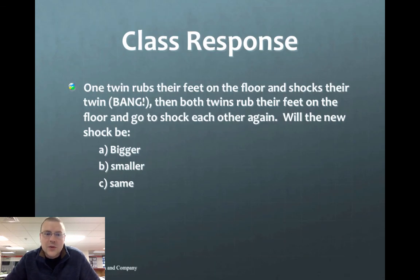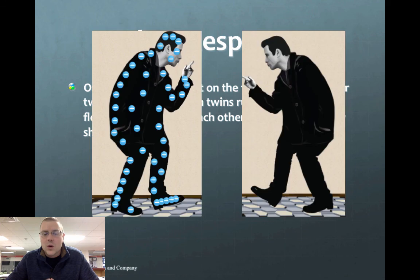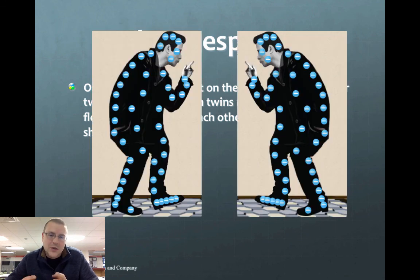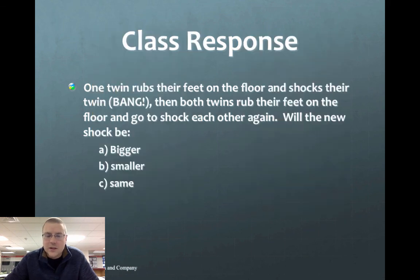So that brings us back to the class response question from the beginning. Having the two twins, one shocks the other twin, and then both twins rub their feet and come together. So when they're both charged and they come together, the shock should be smaller. Because now both are negatively charged, so when the charges do eventually jump, the repulsion will make that shock a little bit smaller than it was the first time.